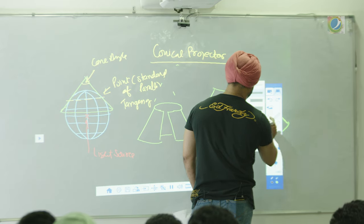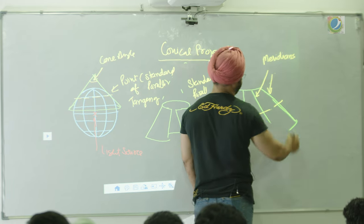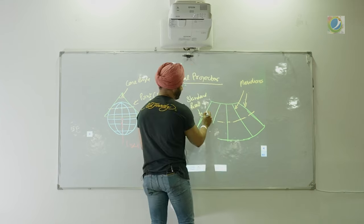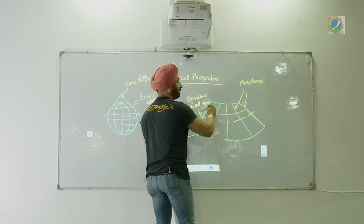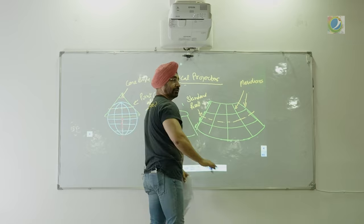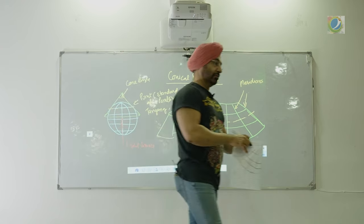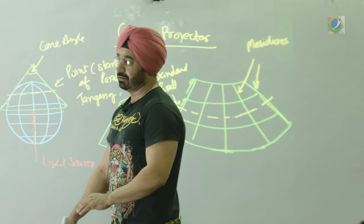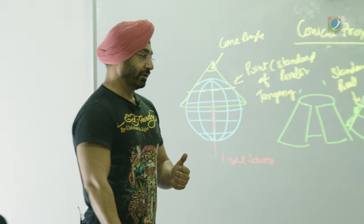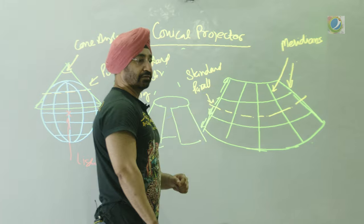This is your standard parallel. These are your meridians. Whatever the distance from the standard parallel, the next distance will increase either side. The scale will expand either side of the standard parallel. The properties are: meridians are straight lines converging towards the nearest pole; parallels of latitude are arcs of concentric circles not equidistant from each other; the distance between them will increase either side of the standard parallel.